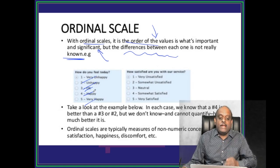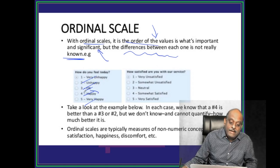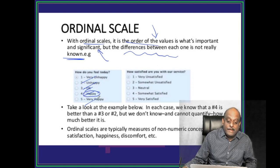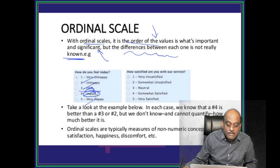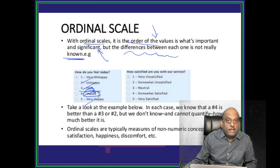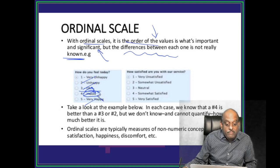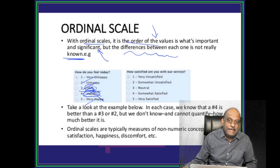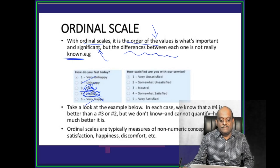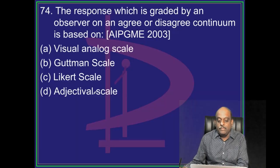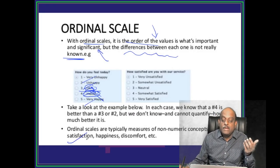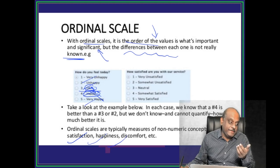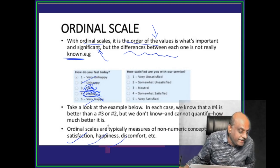These are the various orders. The difference between the happy and very happy, okay and happy is not the same. That is the ordinal scale. So things like satisfaction, happiness, discomfort, for all these things.